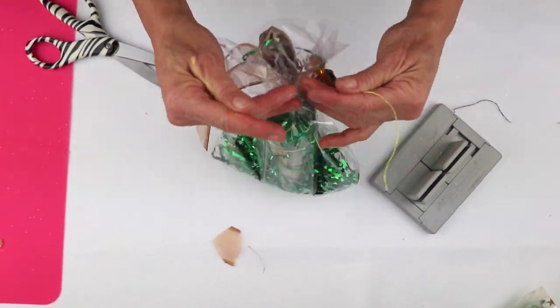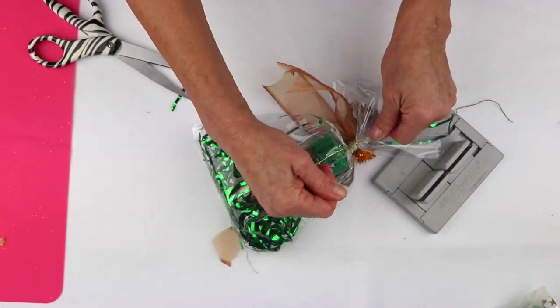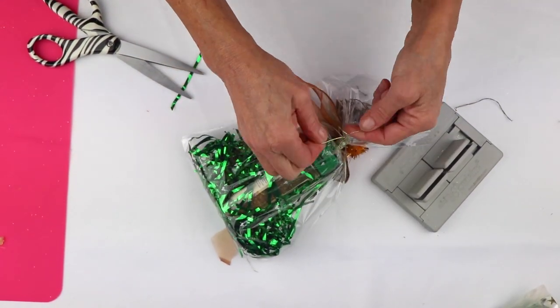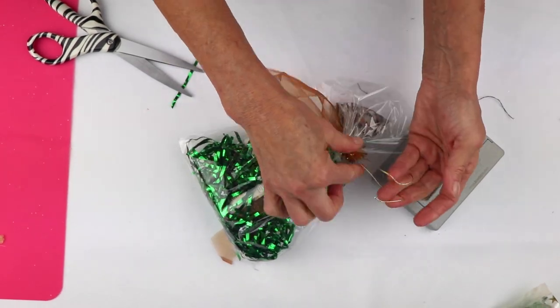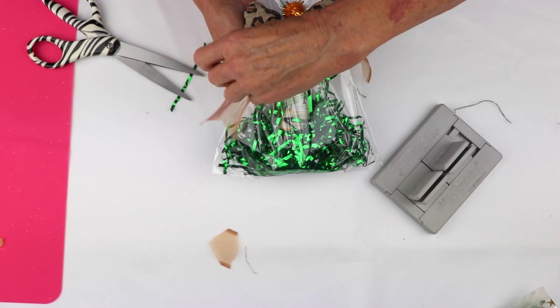Tie it around the gift and I'm going to tie it and knot it. And I'm going to leave the end so I can tie a little card onto it and I'm just going to shape it and you have this really cute little gift.